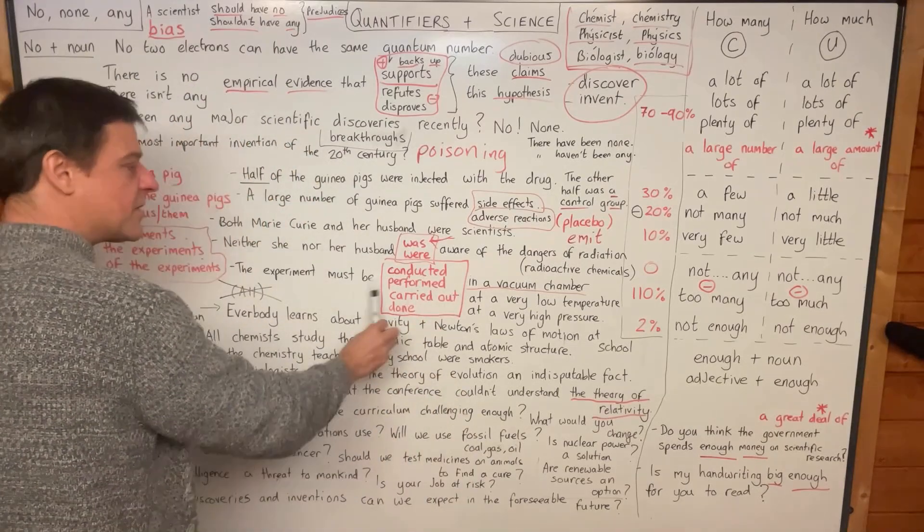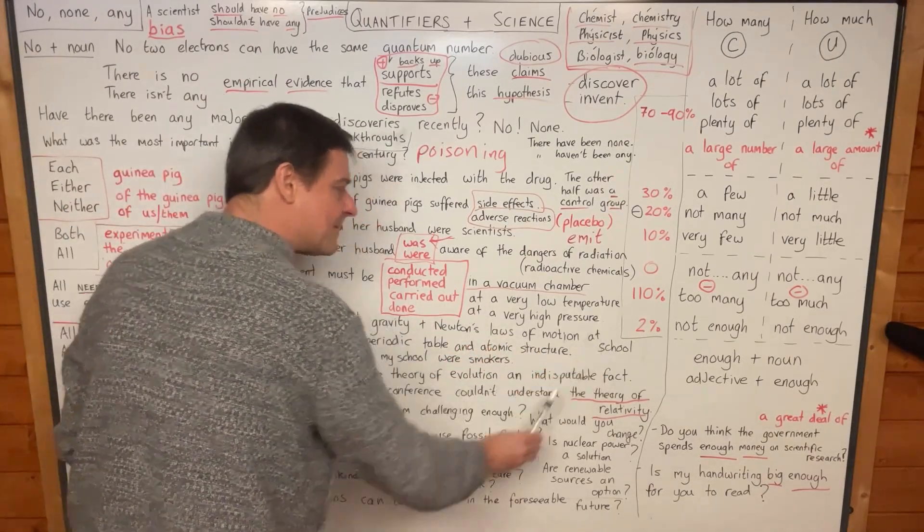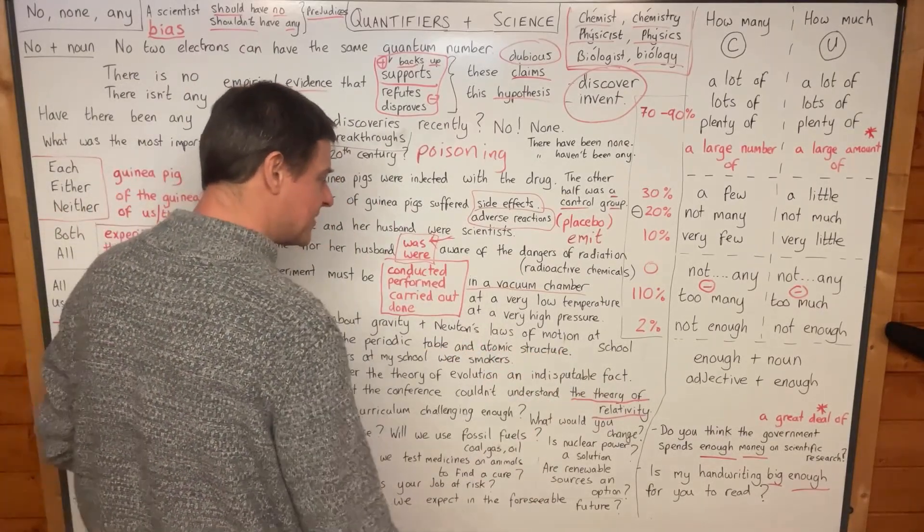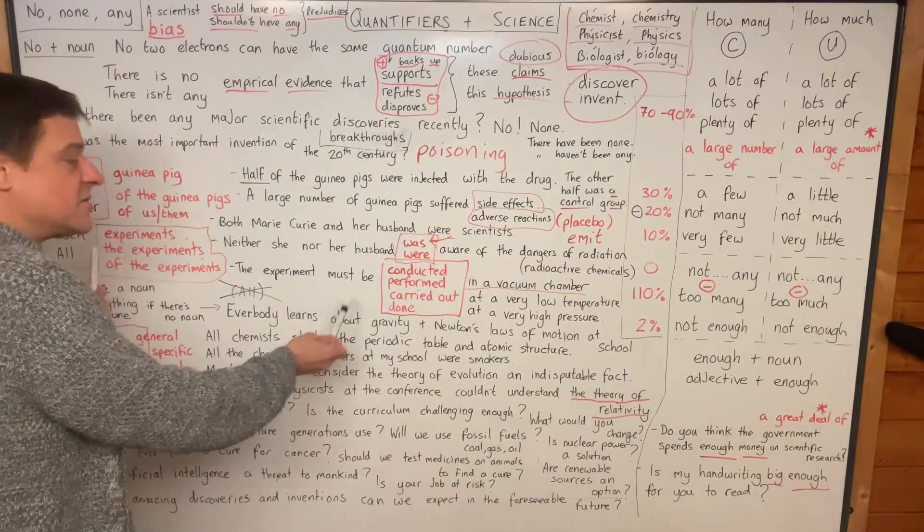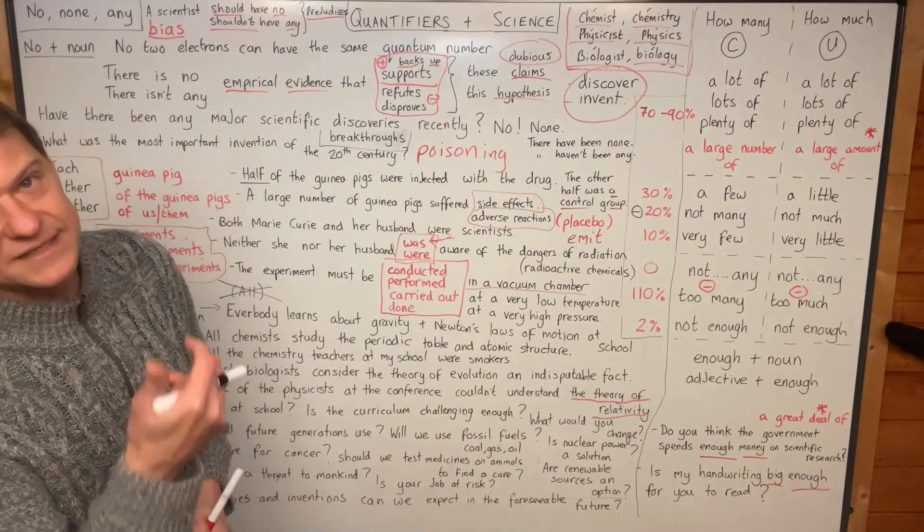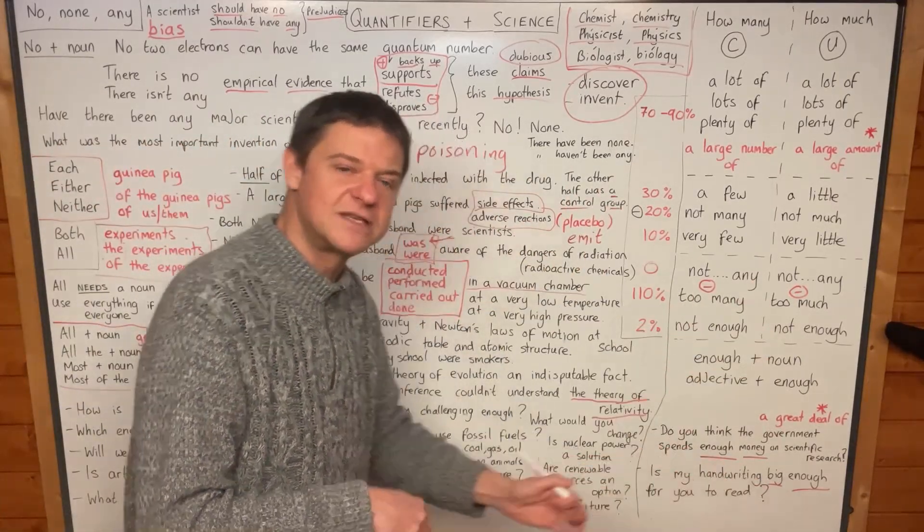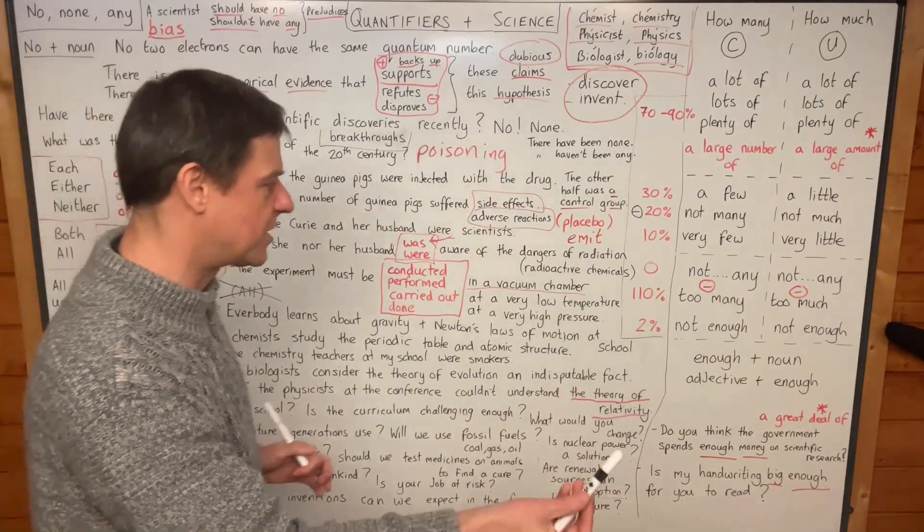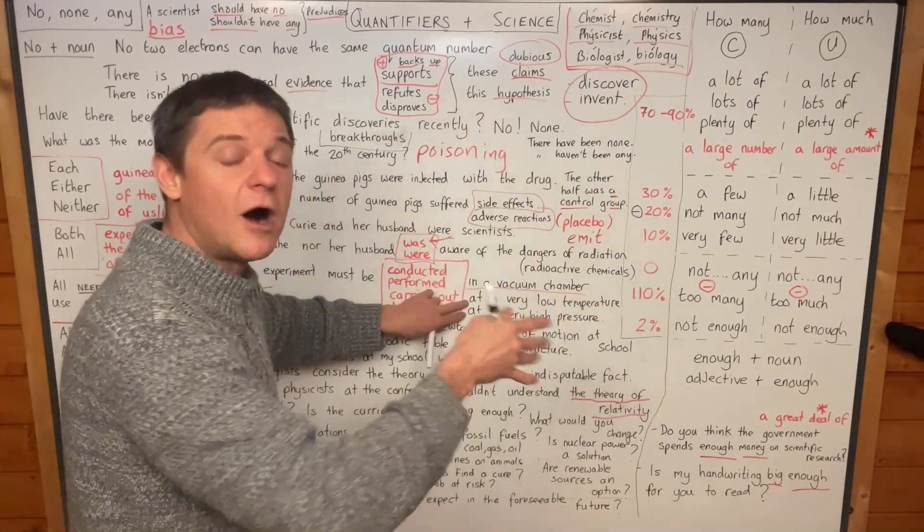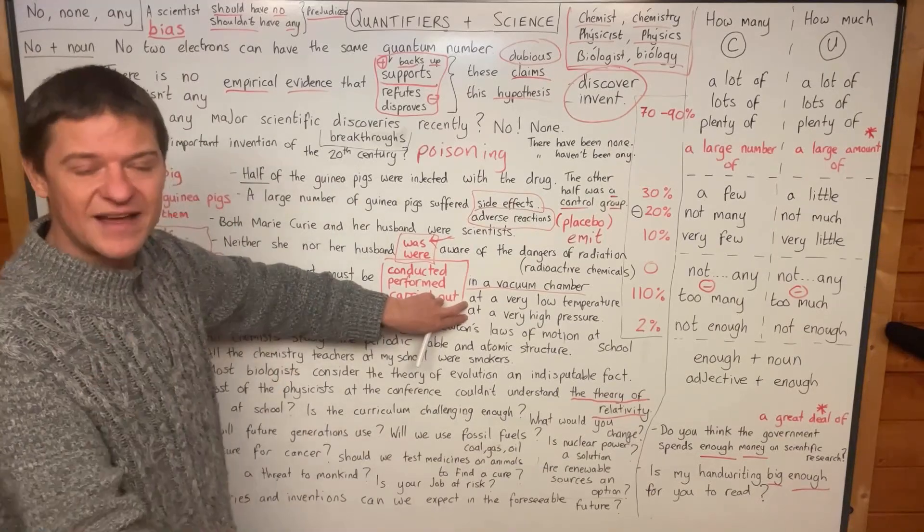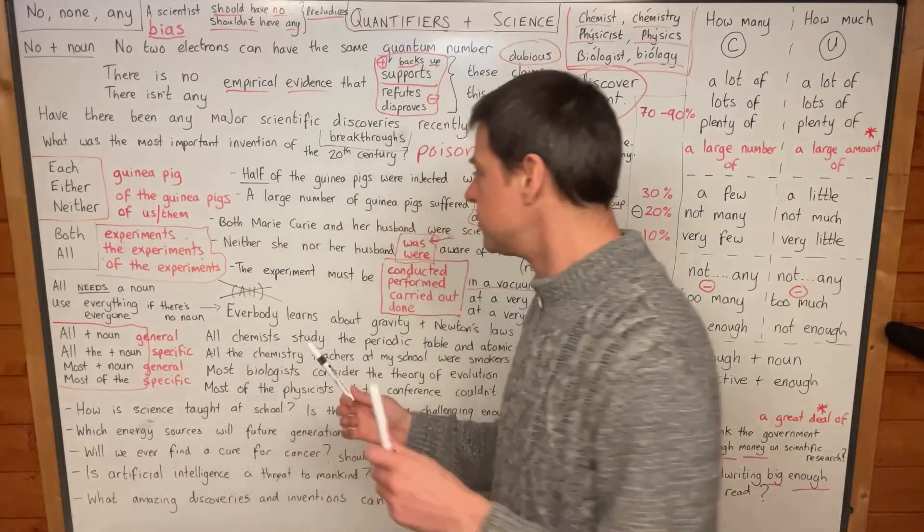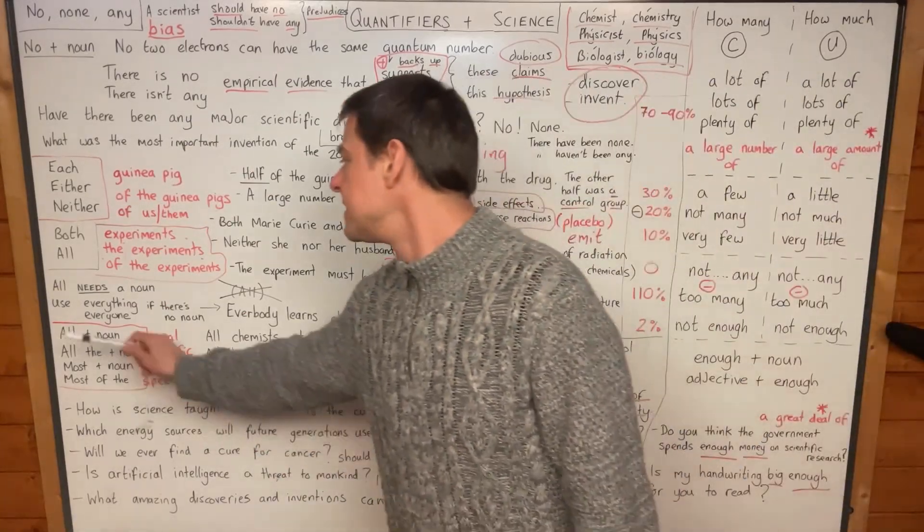You can also conduct the experiment at a low temperature or at a high pressure. You might say you need to do the experiment either at a low temperature or at a low pressure. Notice I'm trying to get equal parts in the 'either X or Y' because it sounds better, sounds nicer, sounds clearer. So low temperature, high pressure—good words for science.